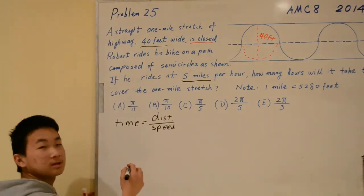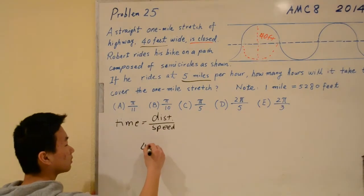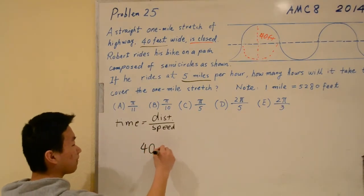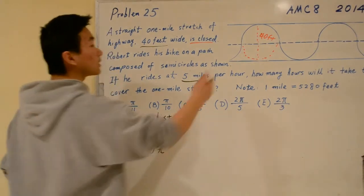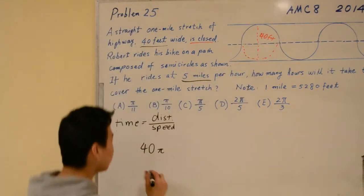The circumference is the diameter 40 times pi. Because we care about the semicircles, let's divide this by 2.